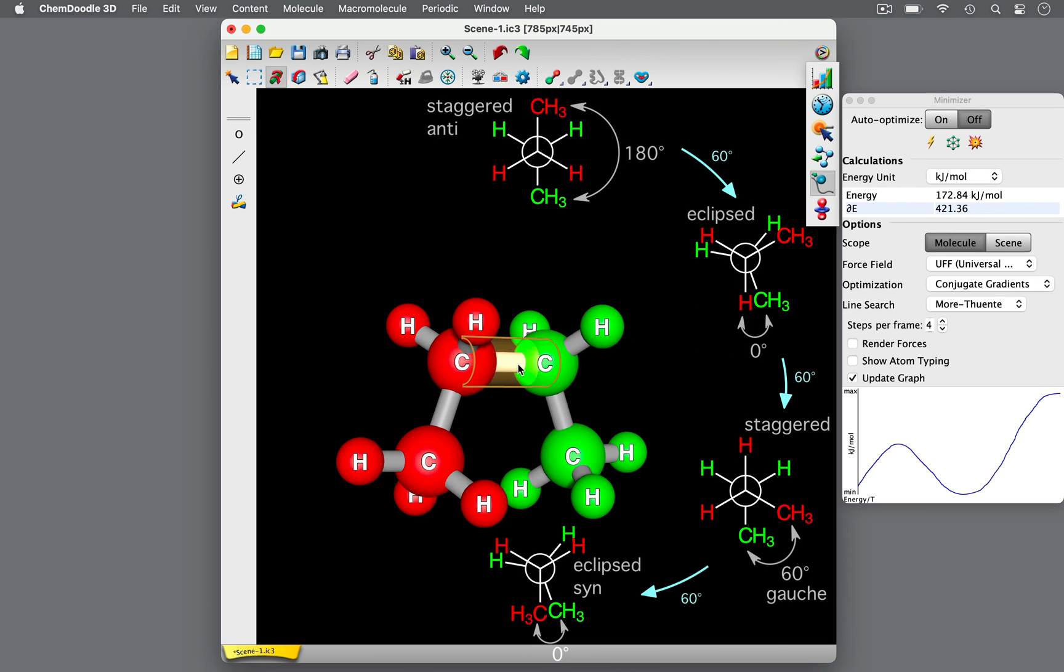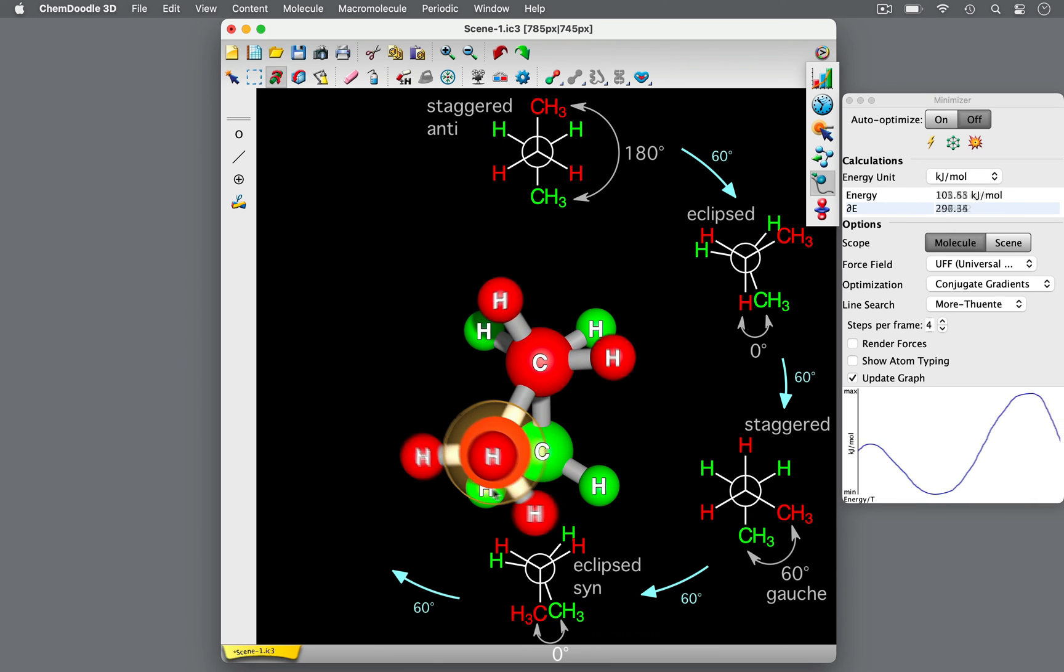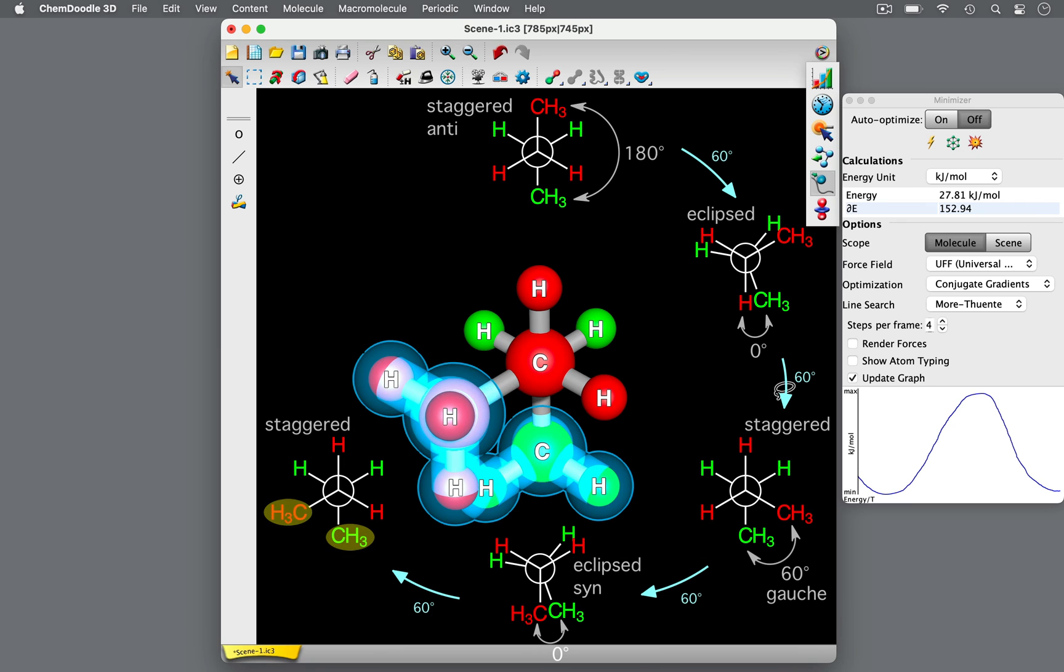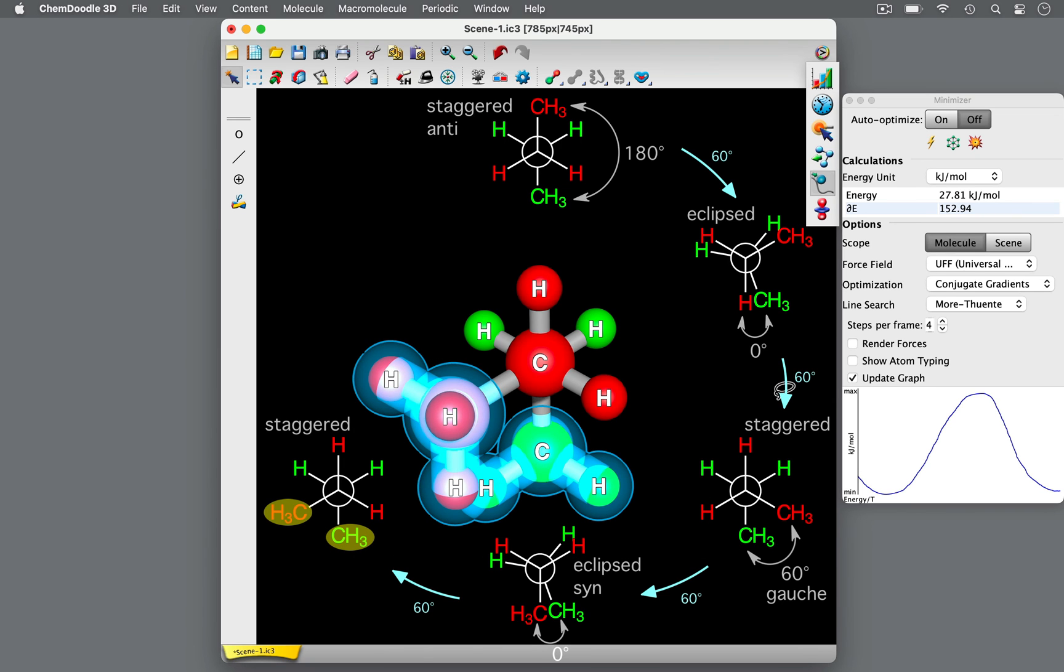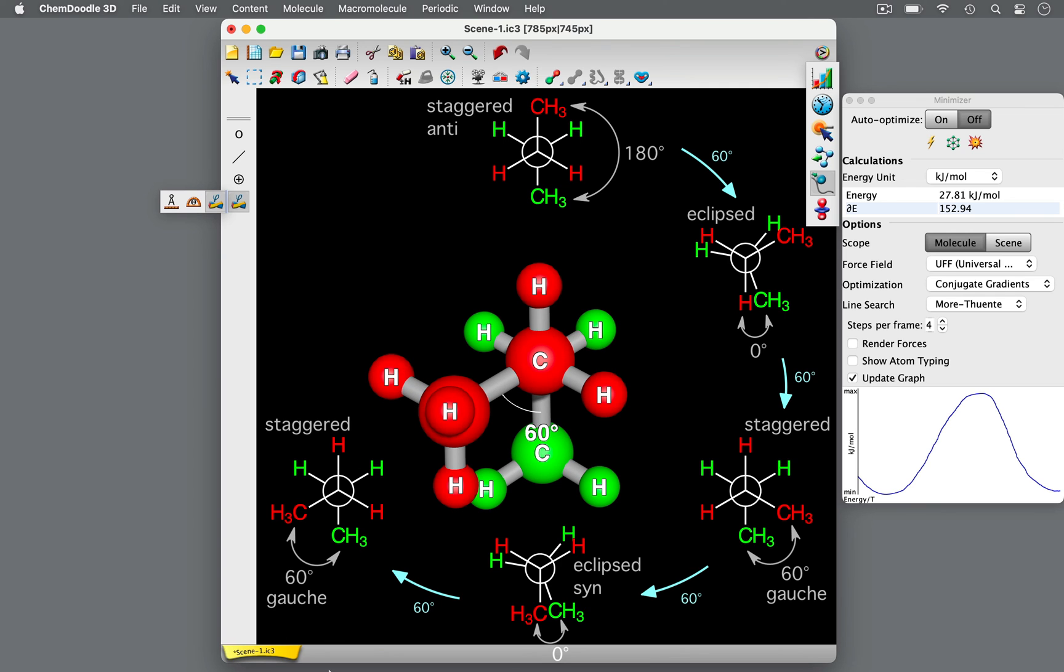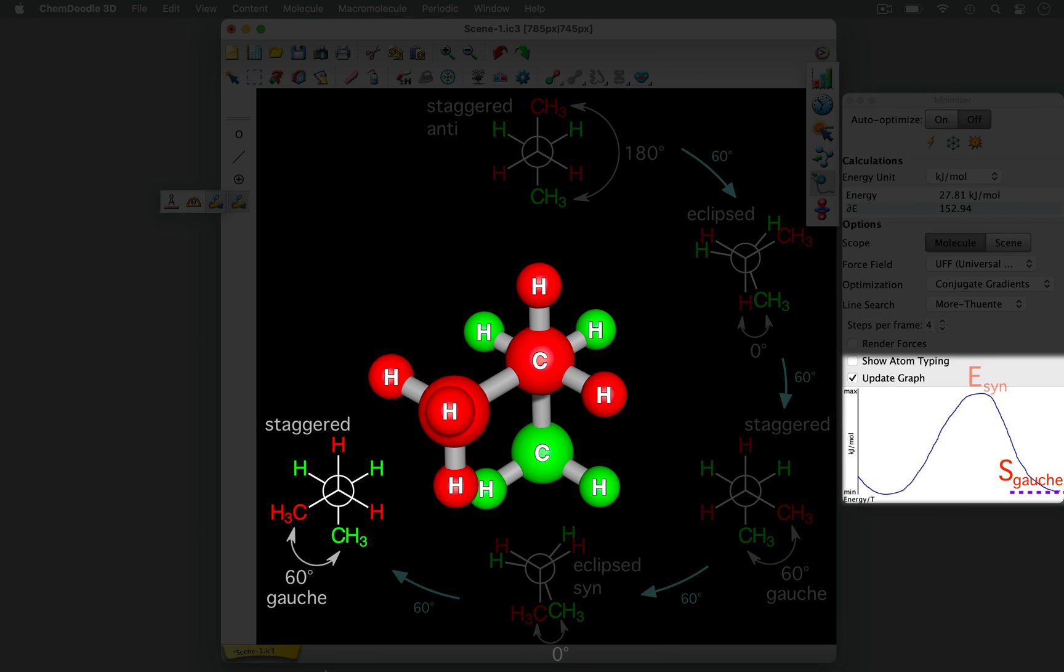Proceeding on with another 60 degree clockwise rotation gives us this view of a Newman projection. The red groups in the front are staggered with the green groups in the back. The two methyl groups are adjacent to each other, with a dihedral angle of 60 degrees, leading to gauche interactions. This staggered gauche conformation, with the methyl to the left, has the same energy as the staggered gauche conformation we saw earlier.